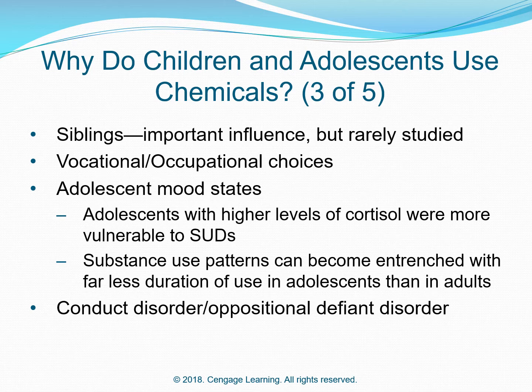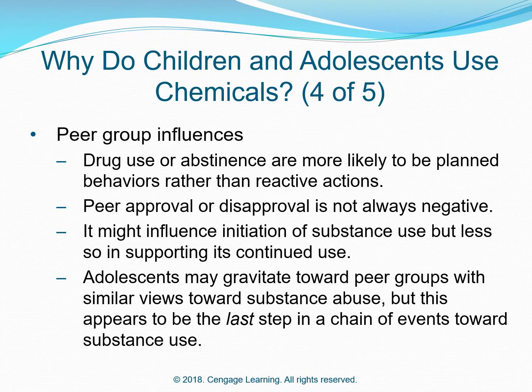Vocational and occupational choices, and adolescent mood states also play a role. Adolescents with higher levels of cortisol are more vulnerable to SUDs. Substance use patterns can become entrenched with far less duration of use in adolescents than adults. Conduct disorder and oppositional defiant disorder are also relevant. Regarding peer group influences, drug use or abstinence are more likely to be planned behaviors rather than reactive actions. Peer approval or disapproval is not always negative — it might influence initiation of substance abuse but less so in supporting its continued use. Adolescents may gravitate toward peer groups with similar views toward substance abuse, but this appears to be the last step in the chain of events toward substance use.